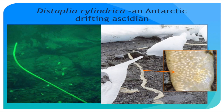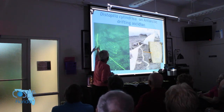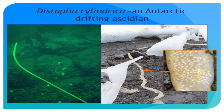Here's another one — a colonial ascidian, or sea squirt, commonly called whale snot in the Antarctic. This is what one looks like underwater: firm and rounded. They start off attached but then break off and float around at the surface. This is a limp dead one that washed up on the beach — you can see how big it is, with its little individuals within the colony. Whole colonies can float wherever wind and current takes them, then sink and start a new colony.